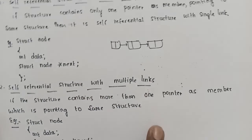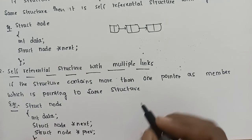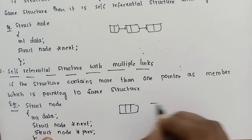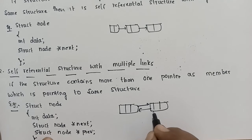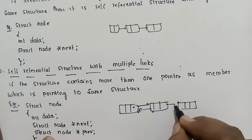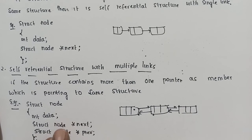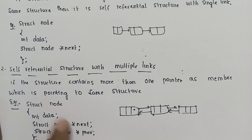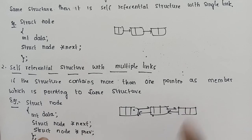The second type is self-referential structure with multiple links. In this case, we use more than one pointer as a member. For example, in a doubly linked list implementation, we use two pointers — one pointer stores the previous node's address and another pointer stores the next node's address. Here we use a self-referential structure with multiple links, where two pointer members point to the same structure type.